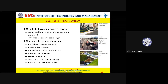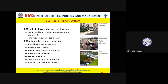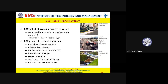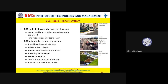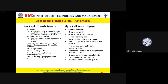A bus rapid transit system involves segregated lanes, either at grade or elevated, with modernized bus technology including automatic passenger movement systems. Advanced features in bus waiting shelters are also provided. BRT modern technology includes rapid boarding and alighting, efficient fare collection systems, comfortable shelters and stations, clean bus technologies, modal integration — integrating different modes of transportation — sophisticated marketing identity, and excellence in customer service.